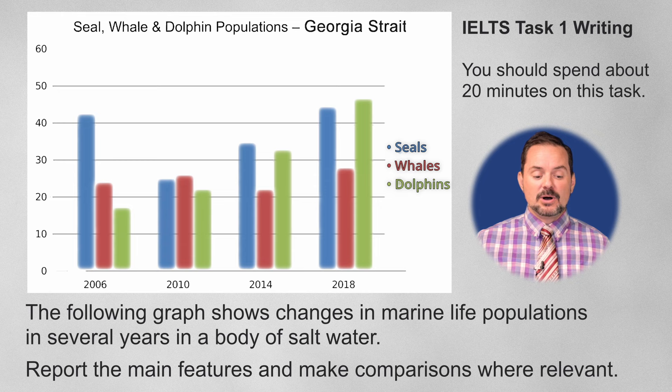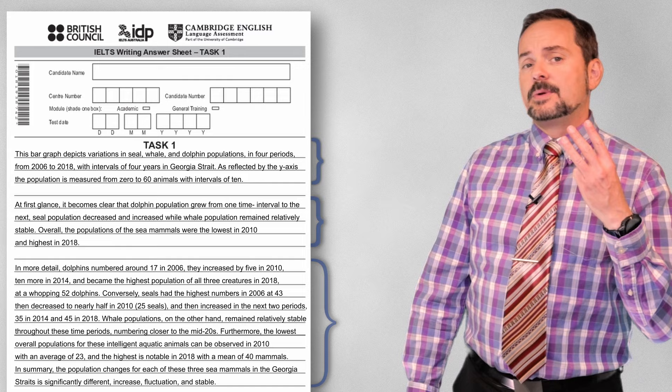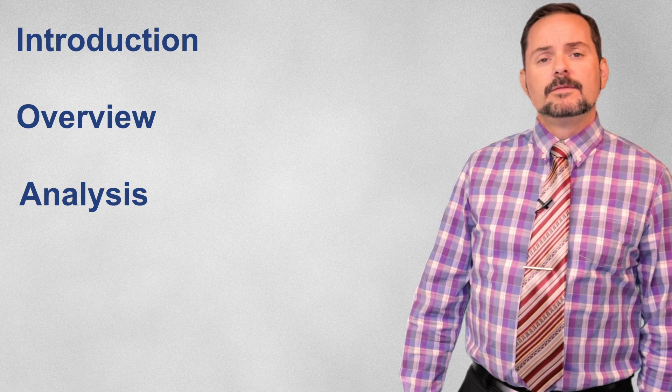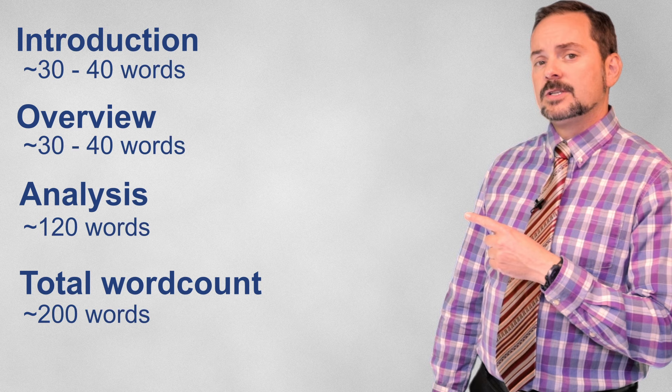Report the main features and make comparisons where relevant. A Band 7 to 9 Task 1 Essay needs to include three paragraphs: first, an introduction, then an overview, and finally the main paragraph, the analyses. The introduction and the overview should be around 30 to 40 words each. The analyses should be around 120 words, for a total of approximately 200 words.